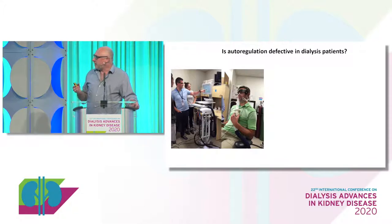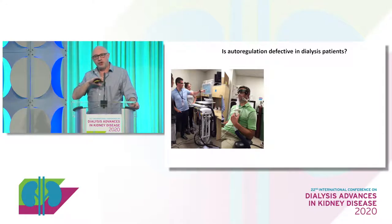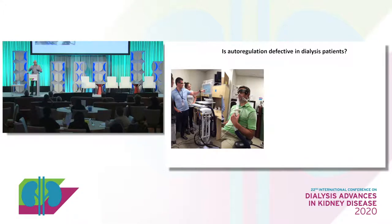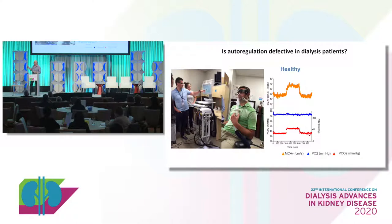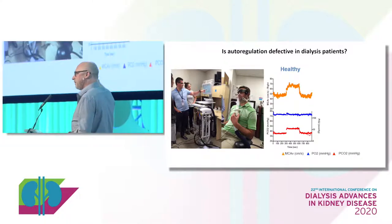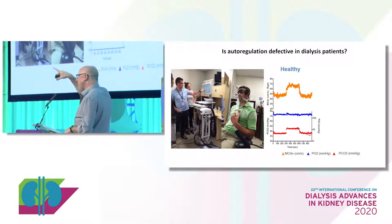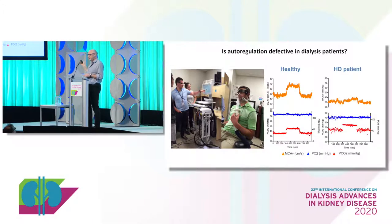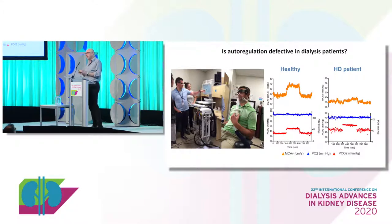This device is called a Respiract, and it uses our ability to modulate end-tidal CO2 to use carbon dioxide as an endogenous vasodilator, allowing a very graduated test of auto-regulatory function. At the same time, we're doing cranial Dopplers to look at brain blood flow. Here's a normal person — the blue line at top is their oxygen, which we keep constant. We deliberately ramp CO2 up and bring it down, and in this normal person they have an appropriate auto-regulatory response on the orange line. However, this is from a dialysis patient — CO2 goes up, but there is no response at all. These are completely aneregic circulations where flow has now become completely pressure-dependent.